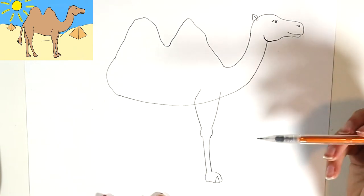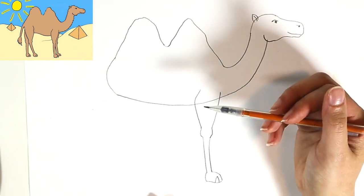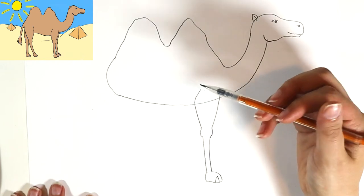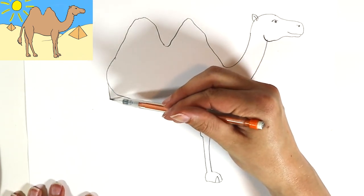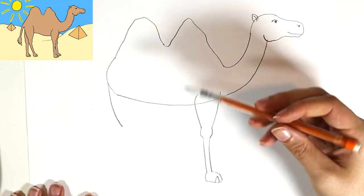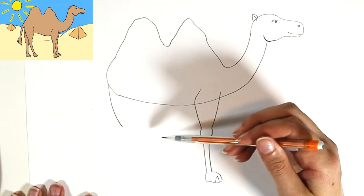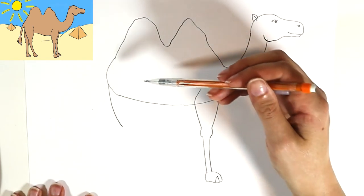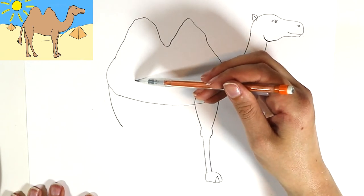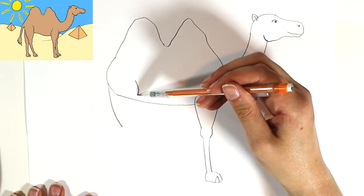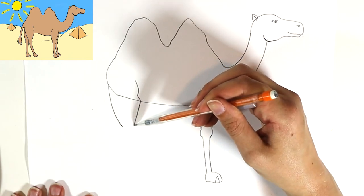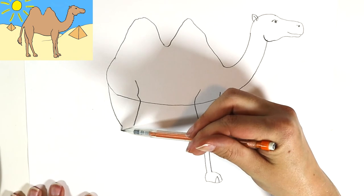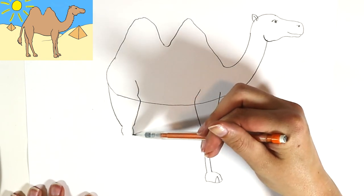And then I'm gonna do the back leg, so starting right here, let's have a line that kind of curves. And again, we want that knee, so we're gonna stop at about the same height on the other side, kind of like little curve and then another curve and then back and bump for the knee.